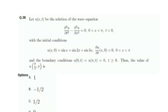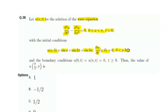Let us start with the first question. The question says: let u be the solution of the wave equation ∂²u/∂t² − ∂²u/∂x² = 0, where x is between 0 to π and t > 0, with the initial condition u(x,0) = sin x + sin 2x + sin 3x and ∂u/∂t at (x,0) = 0, and boundary condition u(0,t) = u(π,t) = 0 for t ≥ 0. We have to find the value of u(π/2, π).